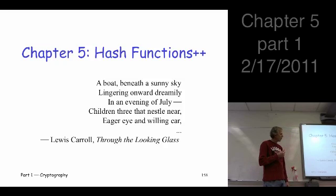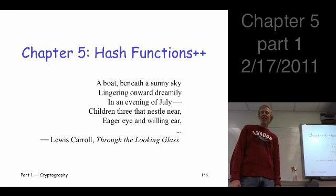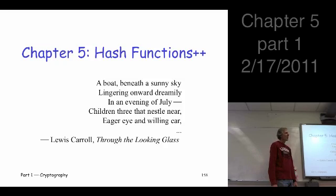And this kind of refers to the plus plus part. So there's this poem, it's very long actually, in Through the Looking Glass. And it starts off like this. A boat beneath a sunny sky, lingered onward dreamily, in an evening of July. Children free, but nestle near, eager eye, and willing ear, blah, blah, blah. Okay. One of the plus plus topics is steganography, which literally means hidden writing. So, is there any hidden message in this poem, you think? Yes. Alice.